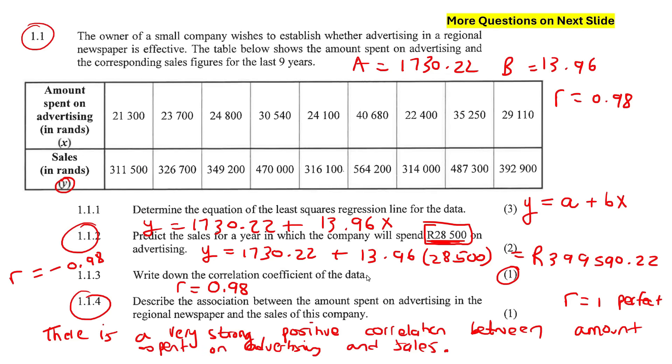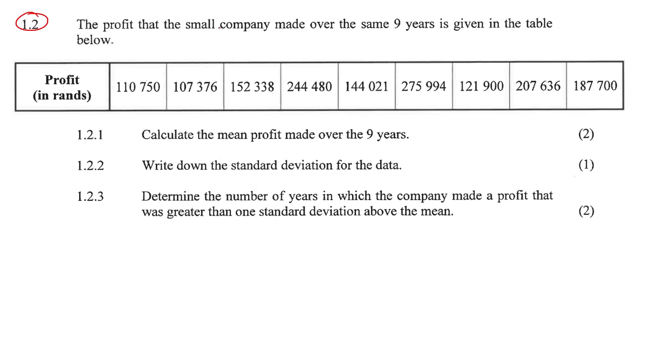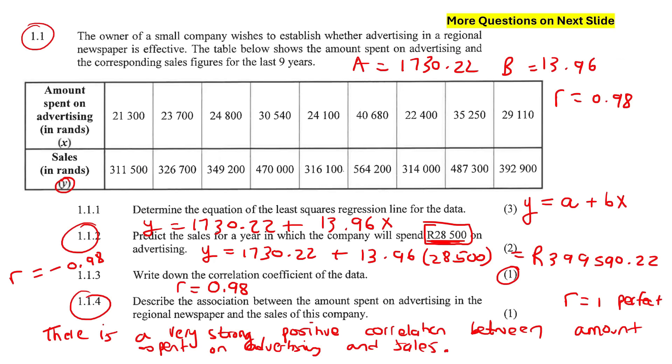Let's move on to the next part of this question. The profit that the company made over the same nine years. This was year number one through year nine. Some of you are like, Kevin, isn't the sales the profit? No. The sales is how much money the company actually made from selling the items. But from that money, they then have to go and pay all of the people who work for the company. They have to pay for all of the equipment. They have to pay for all of these things. And after they've paid for everything, that is where they make the profit.